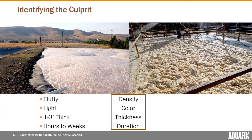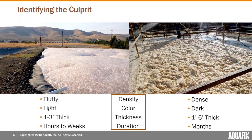Surfactant foams tend to be almost pure white, though they can be tannish in color. These types of foams are typically one to three feet thick. The onset of a bacterial or surfactant foam is usually very abrupt, and the duration is generally not more than one to two weeks. On the other end of the scale, filamentous foam is very dense, not easy to collapse, with a lot of structural integrity, and a fairly dark to tan color.